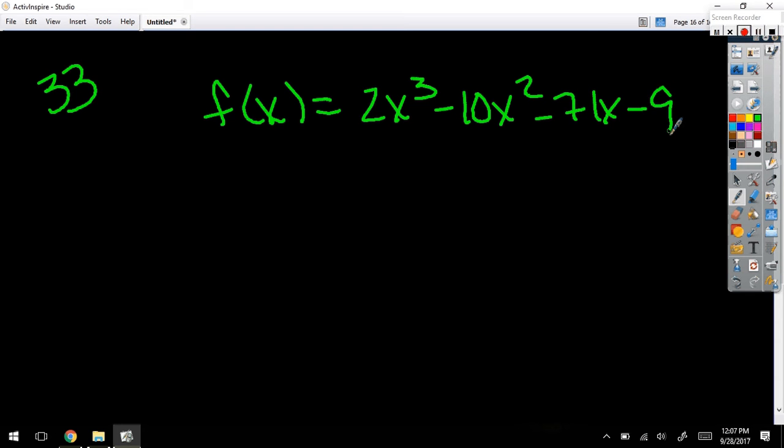Alright, number 33. f(x) = 2x³... Thank you, Shami. So one of the zeros is 9. If it gives me a zero, it also gives me a factor, right?